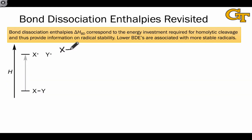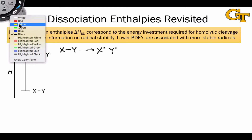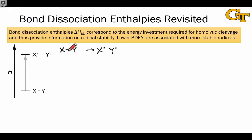Cleaving a bond between two atoms X and Y homolytically to give rise to a pair of radicals is an endothermic process that requires an investment of energy. The atoms would rather be bonded to each other than not bonded with unpaired electrons, so there's an uphill climb in energy required. The amount of energy required to do this is referred to as the bond dissociation enthalpy, or BDE. We've already seen how we can use BDEs to determine the thermodynamic favorability of a reaction, but BDEs can also give us insight into radical stability.